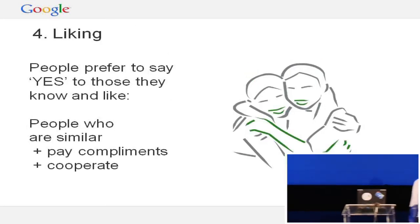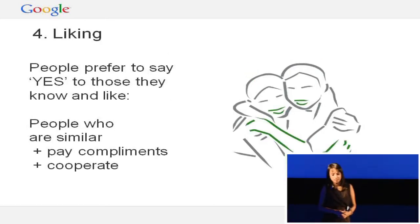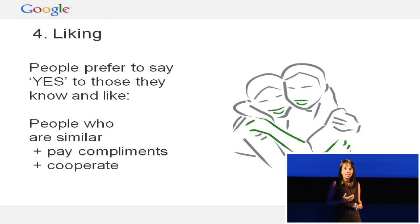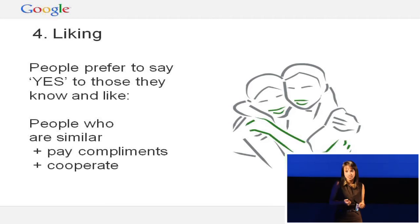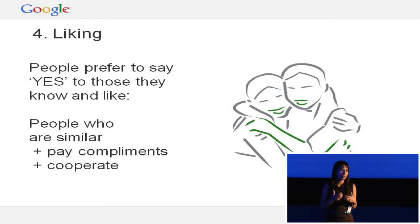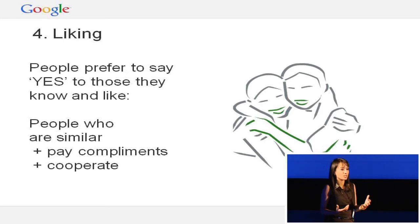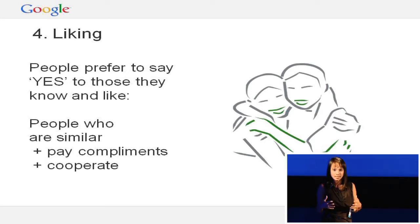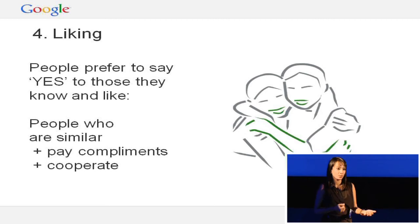The fourth principle is liking and likability. We're more likely to say yes to somebody that we know, someone who shares similar interests. This is again about building rapport with your client — finding out who they are, what their interests are, and building on those similarities to then get them to cooperate with you.